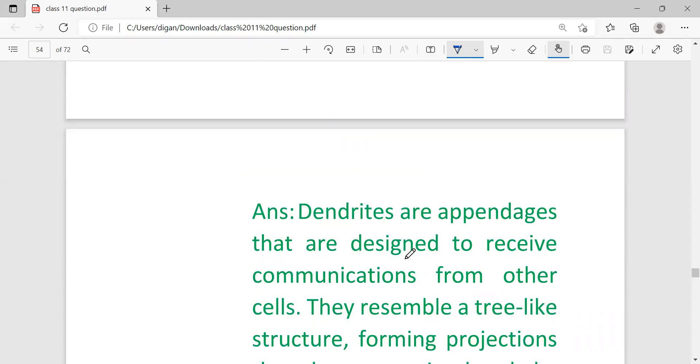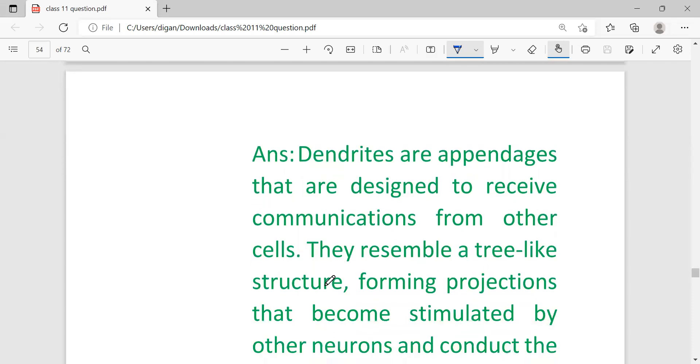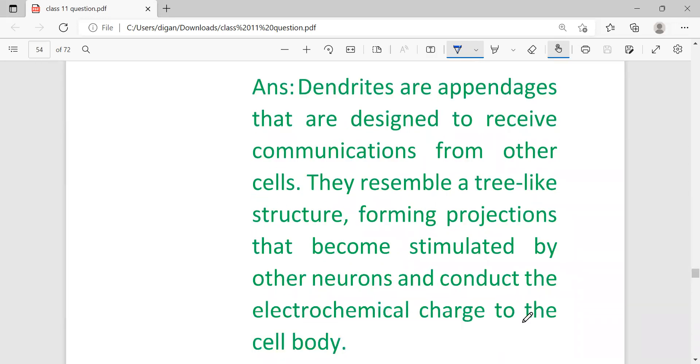Dendrites are the appendages designed to receive communications from other cells. They resemble a tree-like structure forming projections that become stimulated by neurons and conduct electrochemical surges to the cell body. If only one mark comes, write up to cell body. If two marks, write both sentences.